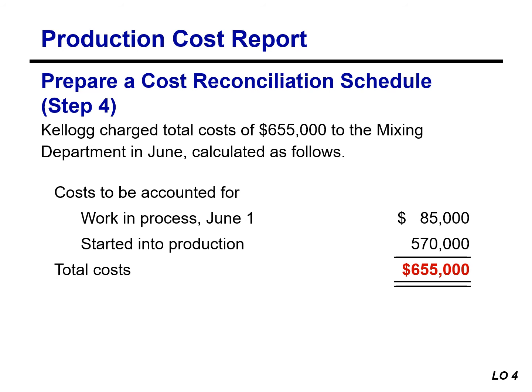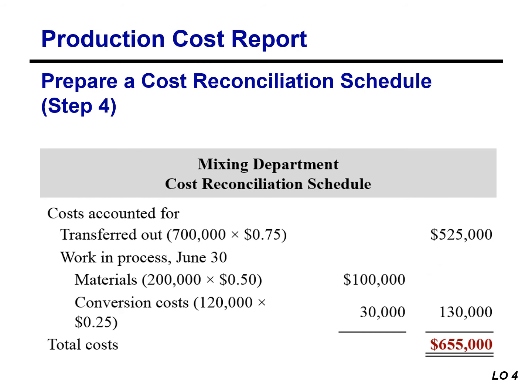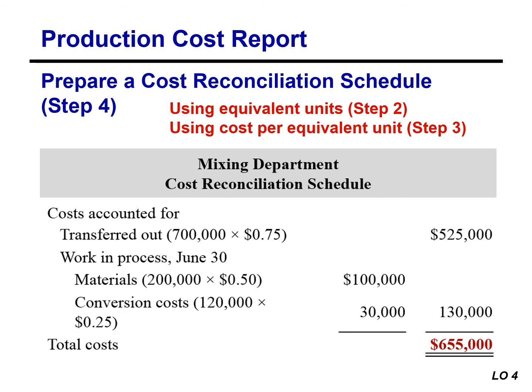We are now ready to determine the cost of goods transferred out of the mixing department to the baking department and the cost in the ending work in process. Kellogg charged total costs of $655,000 to the mixing department in June. In step four, we prepare a cost reconciliation schedule to assign these costs to units transferred out to the baking department and units remaining in ending work in process inventory. We transferred out 700,000 units at $0.75 total manufacturing cost per unit, allocating $525,000 to transferred-out units.